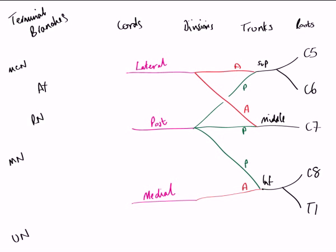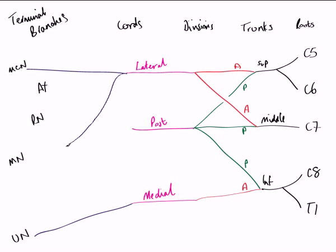If we look at the musculocutaneous nerve first, it is a direct continuation of the lateral cord. Similarly, the ulnar nerve is a direct continuation of the medial cord. The formation of the median nerve is somewhat more complicated, as it receives a branch from both the lateral cord — coming down here — and also a branch from the medial cord. This creates the characteristic M-shape arrangement: the lateral cord giving off the musculocutaneous nerve, the medial cord giving off the ulnar nerve, and branches from both the lateral and medial cords coming together to form the median nerve.